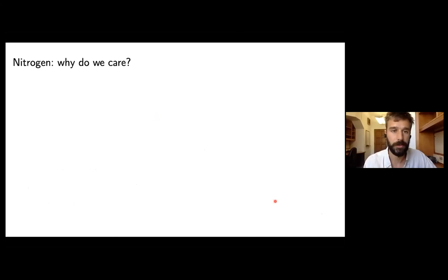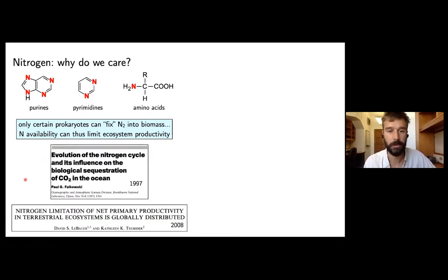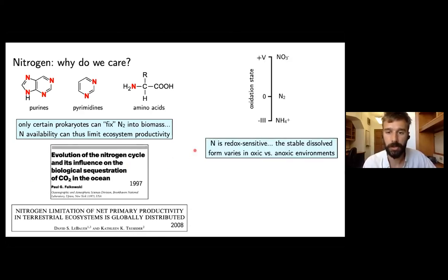Why would we start with nitrogen? There are a couple of reasons. First off, nitrogen is an essential building block of all life. It's in fact the next most abundant atom after carbon, hydrogen, and oxygen, needed in our nucleobases and amino acids. So all life needs nitrogen, but there's a catch, which is that most nitrogen at Earth's surface is present as N2 in the atmosphere, and this N2 can only be fixed or accessed by a subset of prokaryotes—bacteria and archaea—and basically the rest of the biosphere then depends on the supply of nitrogen.